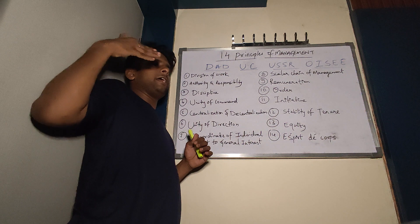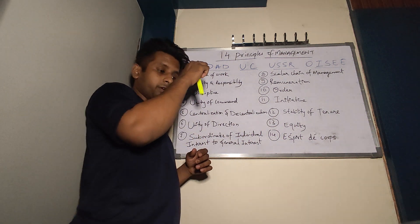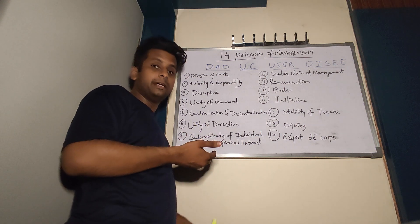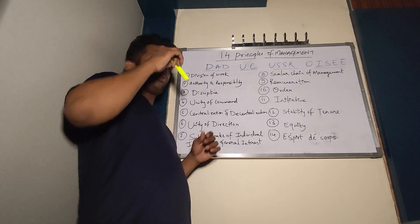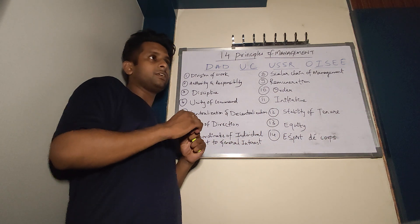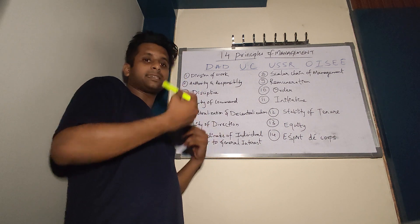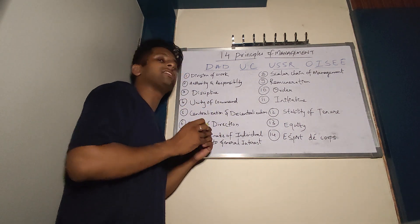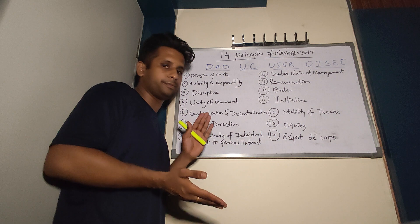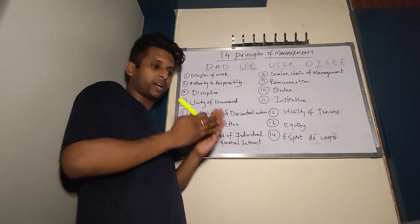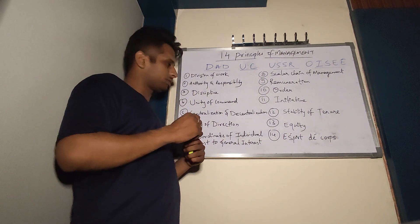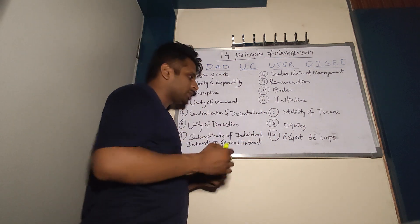Unity of Command means information and commands flow in a single direction — from CEO to Vice President, Vice President to Manager, Manager to Team Leader, Team Leader to Supervisor, and then to the Employee. It has to flow in a particular chain-like manner and cannot skip levels.